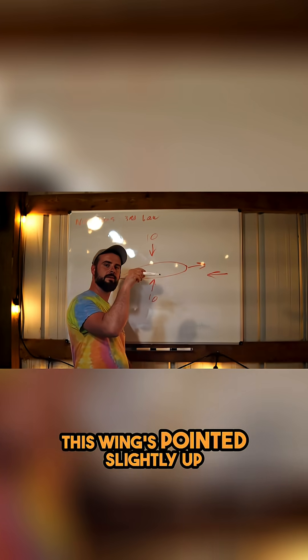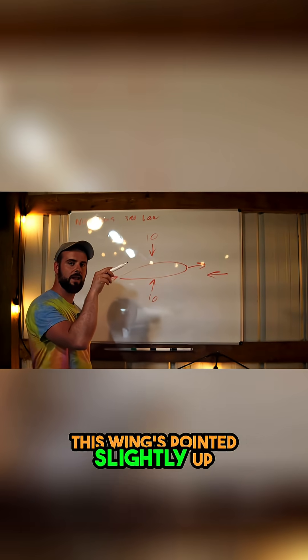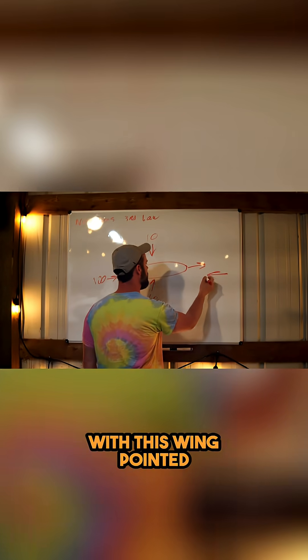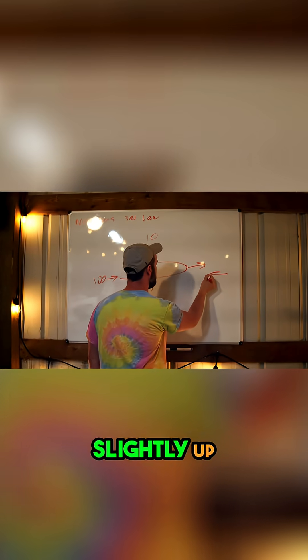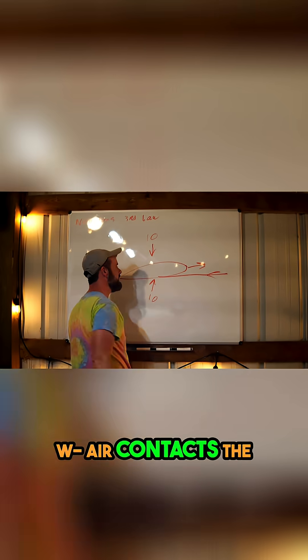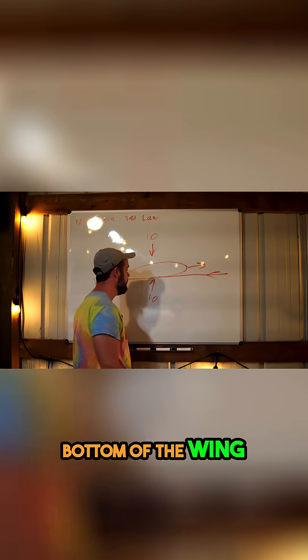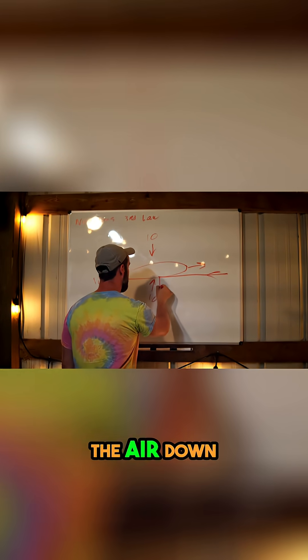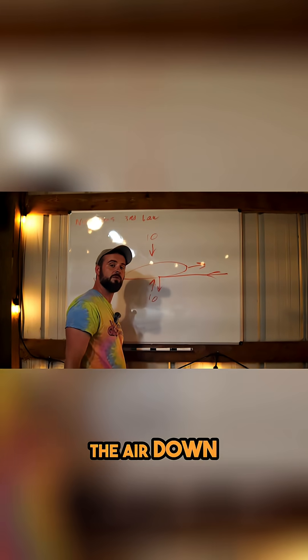As you can see, this wing is pointed slightly up. With this wing pointed slightly up, the air contacts the bottom of the wing. The wing then deflects the air down.